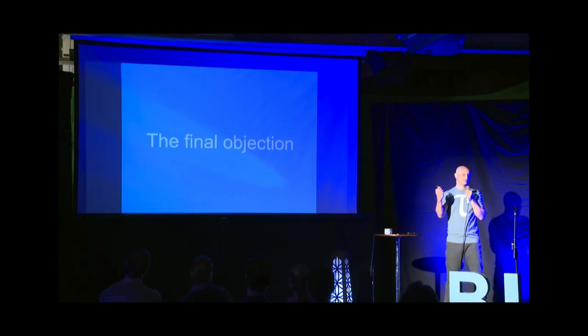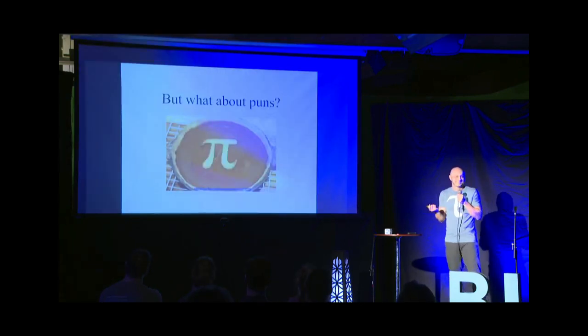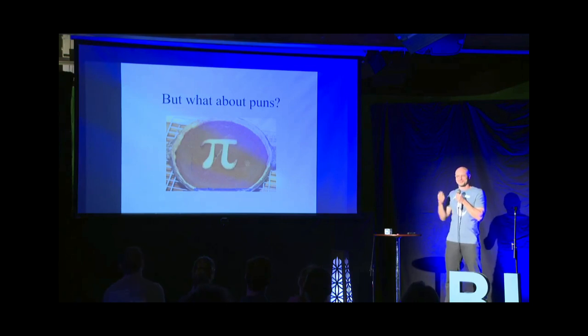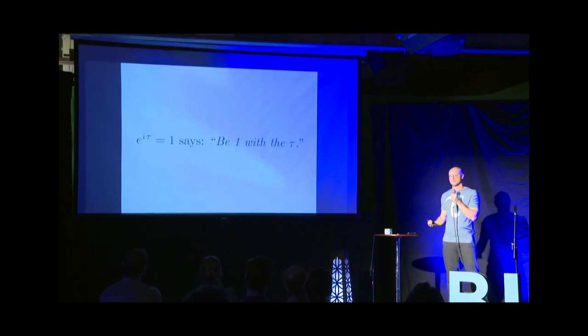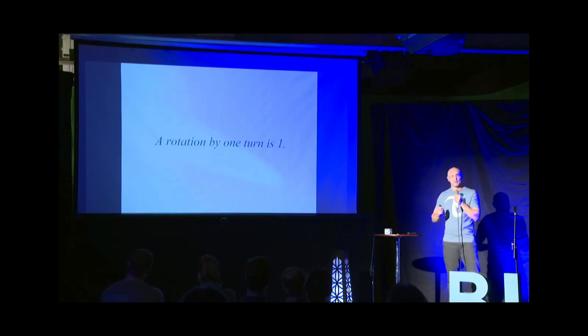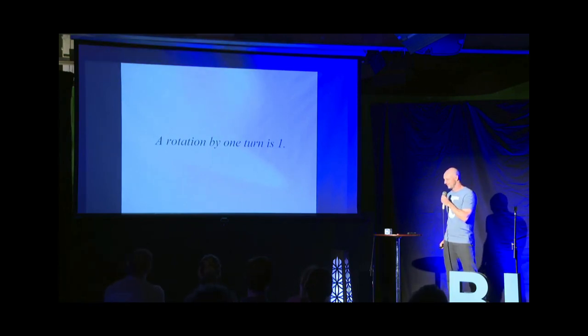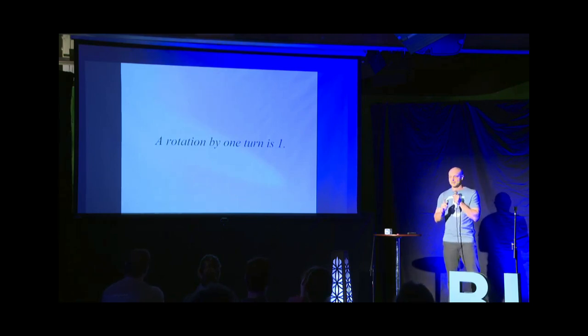So we come now to the final objection. What about puns? Pi is so much fun. You know, pi r round, pi in the sky. This just means you haven't fully accepted the doctrine of tauism. Because as tauists, we know that e to the i tau equals one says, be one with the tau. A rotation by one turn is one may sound like a tautology. But in fact, it is the true nature of the tau. But we must remember that tauism is based on reason, not on faith. Tauists are never pious.